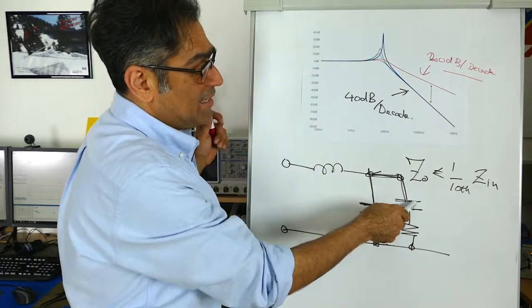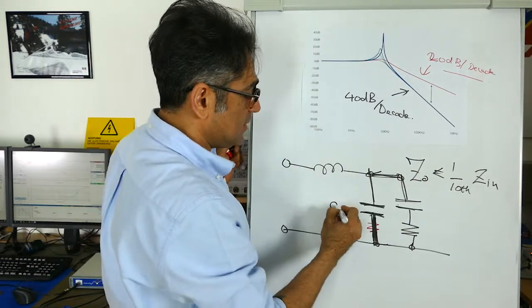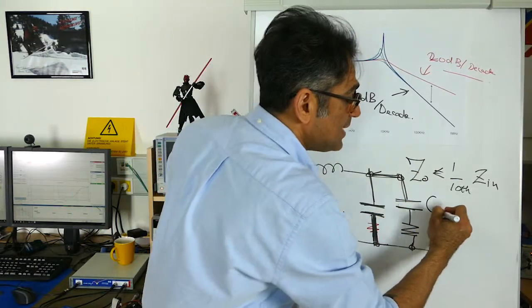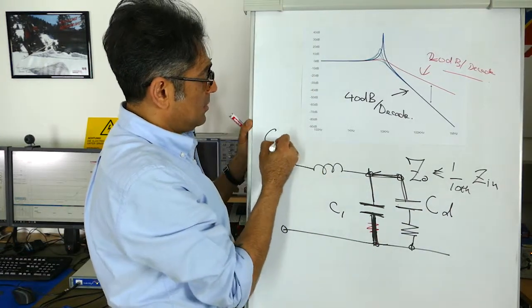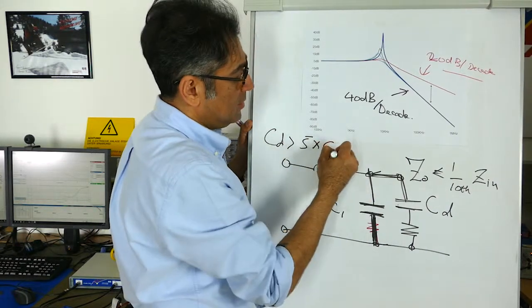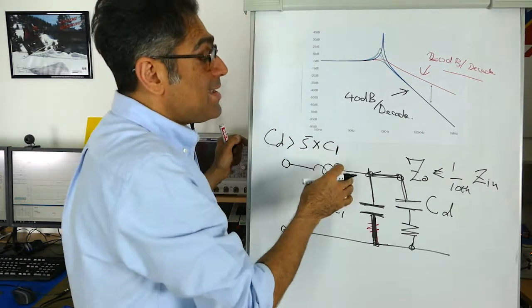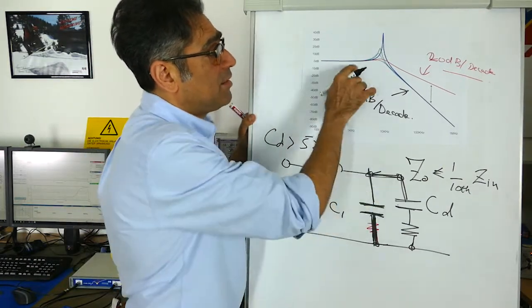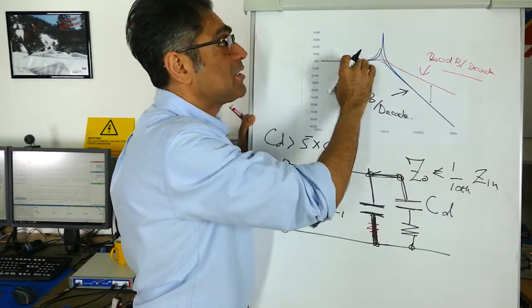And provided that this one is at least five times bigger than this one so let's call this C1, let's call this Cd for damping and Cd has to be bigger than five times C1. It will not impact the cutoff frequency or the roll-off however it will damp the Q.